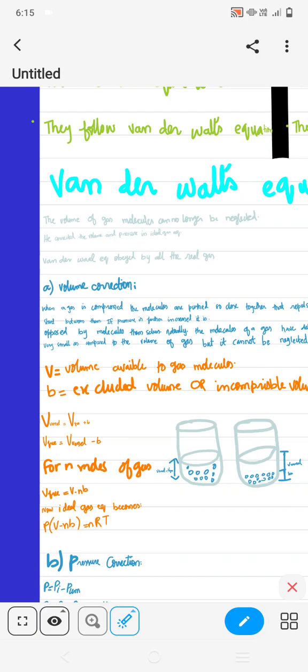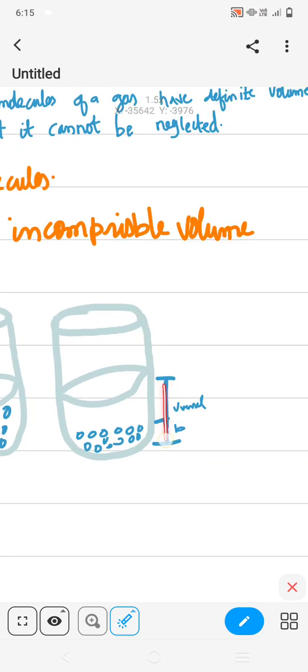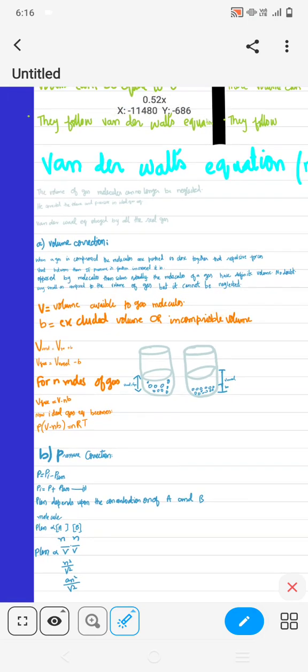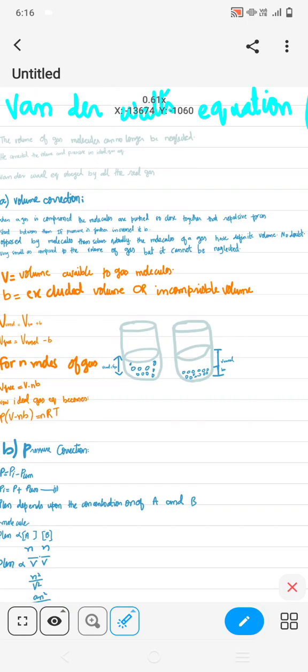Here we have a derivation. This is the vessel and the vessel is equal to the volume of the gas. Now I compress it so much that this is the part B. This is the vessel, this is the volume of the gas. This is the part B, this is the free volume of the gas, this is the compressed molecule. This is the volume available to the gas molecules.